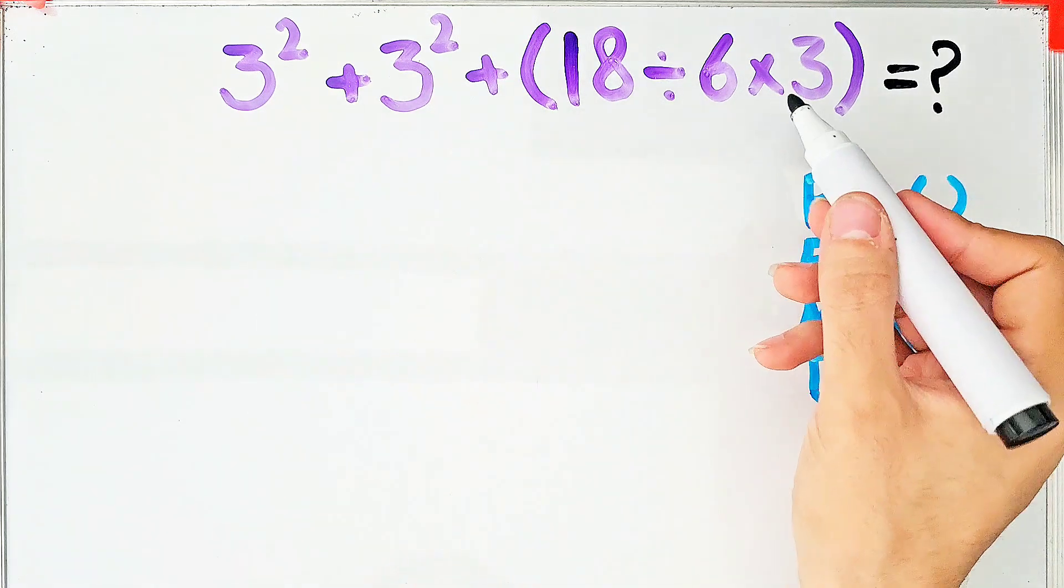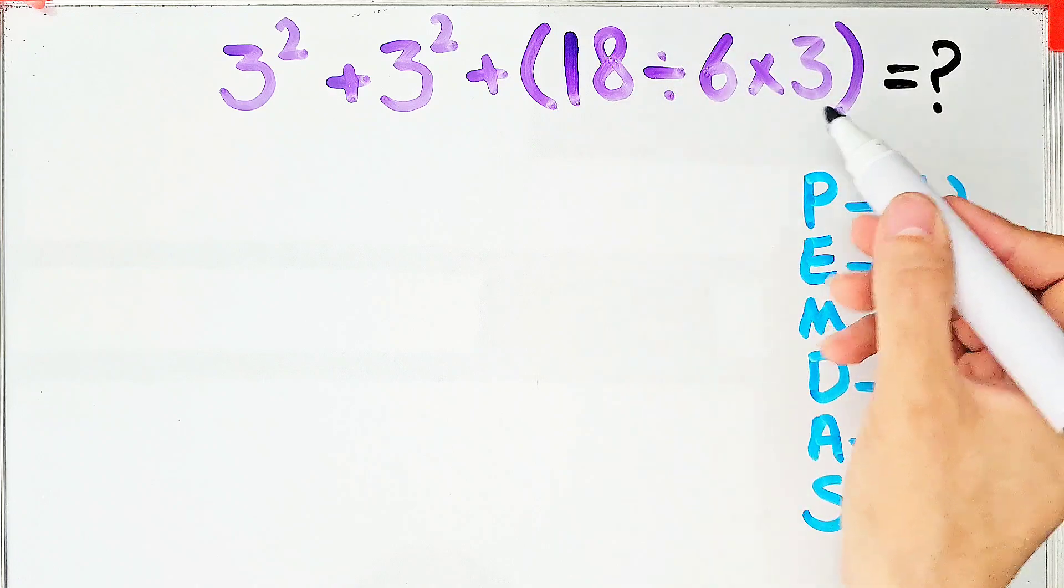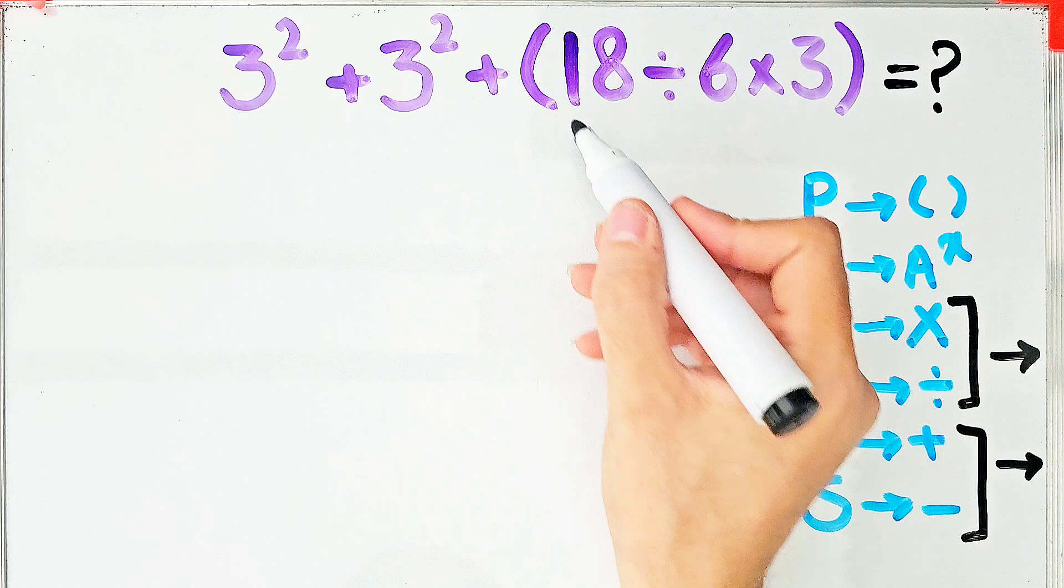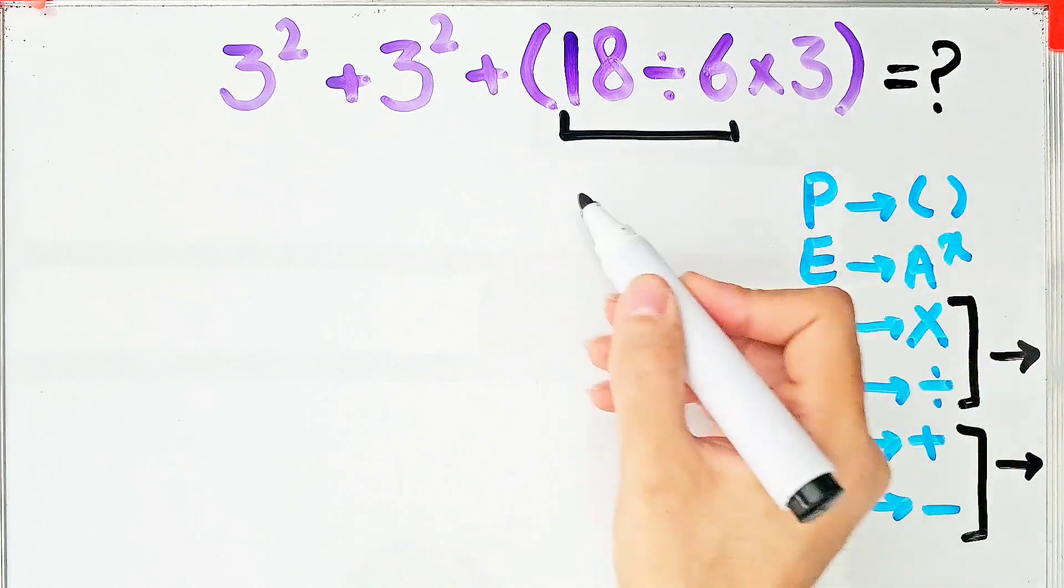According to the PEMDAS rule, first we simplify the parentheses. Inside the parentheses, we have division and multiplication. Multiplication and division have the same level of priority and we start from the left and simplify.